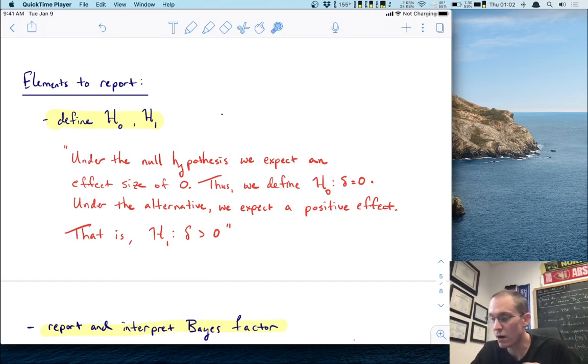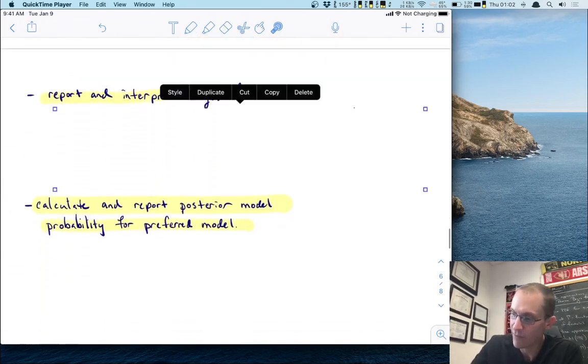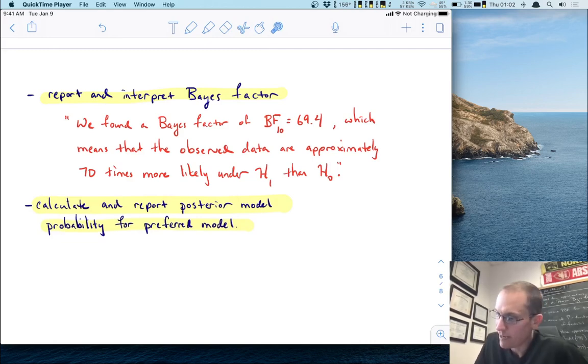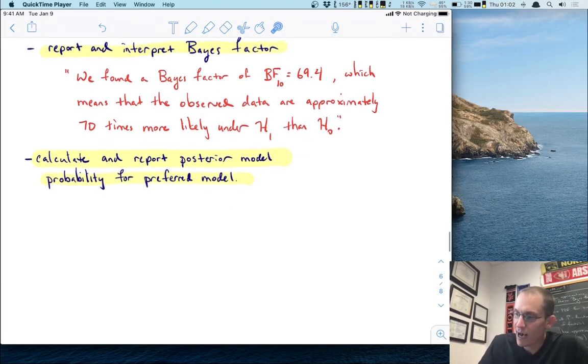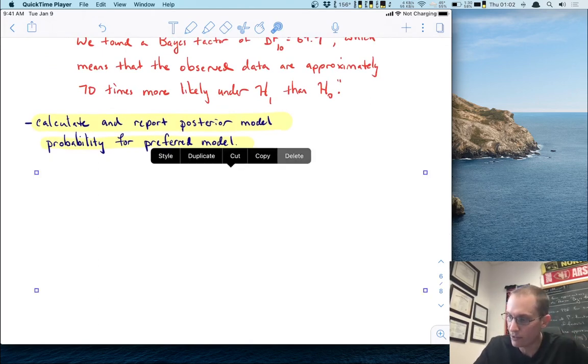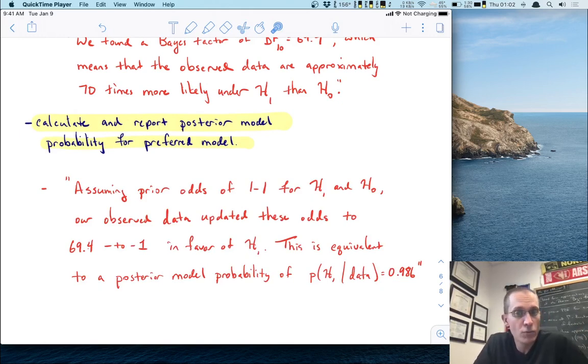So now that the reader knows what the models are, let's figure out which is the best model. So to do that, we will report and interpret the Bayes factor. So we're going to do that predictive adequacy interpretation here. We found a Bayes factor of this BF10 equals 69.4, which means that the observed data are approximately 70 times more likely under H1 than H0. It's really close to 70, so I just wrote it as a 70. You could just say they're 69.4 times more likely. It doesn't matter. If you want to round, that's fine. But the point is we use that predictive adequacy interpretation here. Then I want to report the updating part of this posterior model probability. So I would say something like this, assuming prior odds of one to one for H1 and H0, our observed data updated these odds to 69.4 to one in favor of H1. That's because the Bayes factor is the extent to which those prior odds get multiplied. And if you convert 69.4 to one into a probability, you get a posterior probability of this.